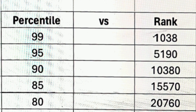If your percentile is 99, your rank will be 1,038 — you will easily get CSC, ISC, and even ECE branch in RVC. If your percentile is around 95, the rank will be 5,190 and you will get good options within the top 10 colleges with CSC and ECE branches.